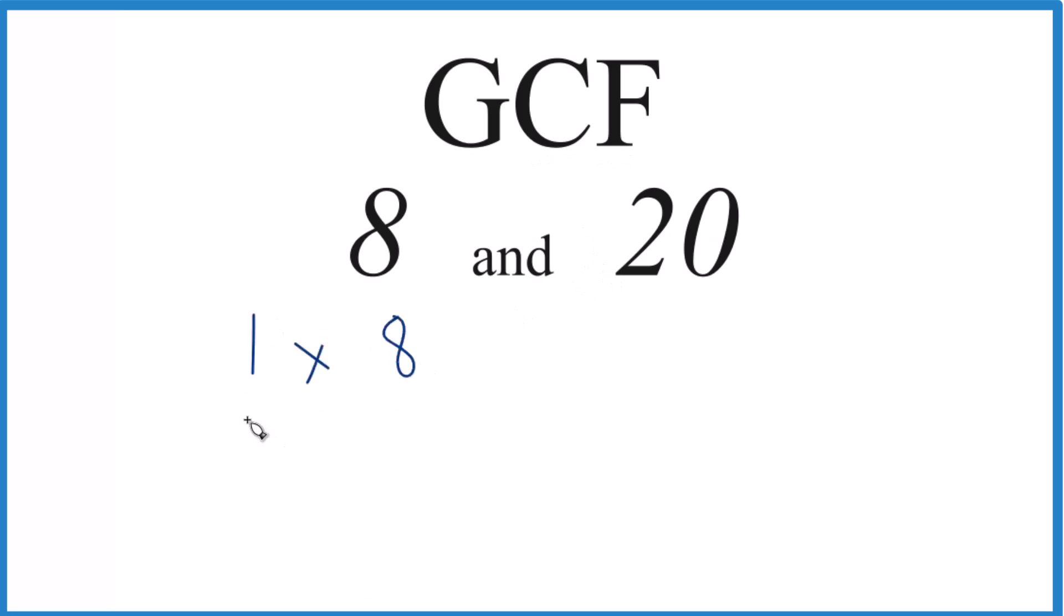20 we could have 1 times 20, 2 times 10, and 4 times 5. That equals 20. So we have our factors here. Now we look at what's in common.